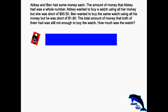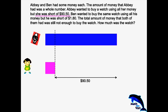Now zooming in sentence by sentence, looking at AB — AB wanted to buy a watch using all her money but she was short of $90.50. In model drawing, you must label all the important information, and in this case we know that she was short of $90.50.